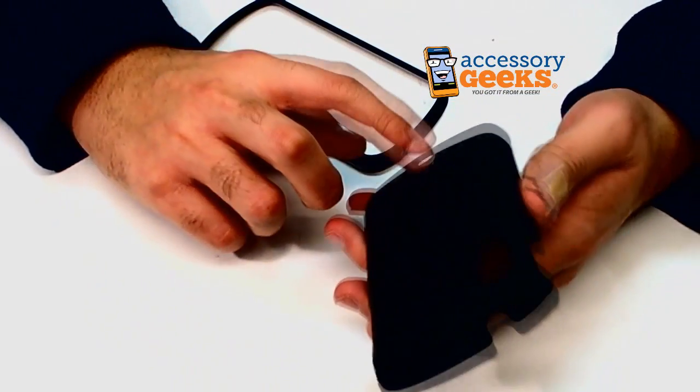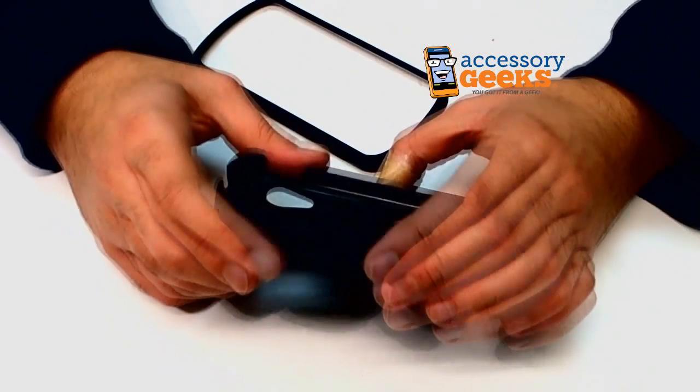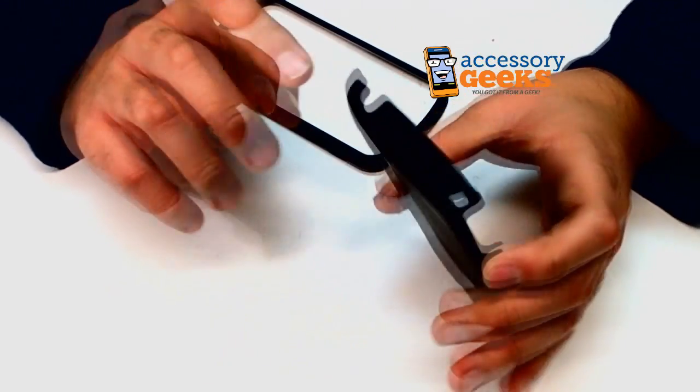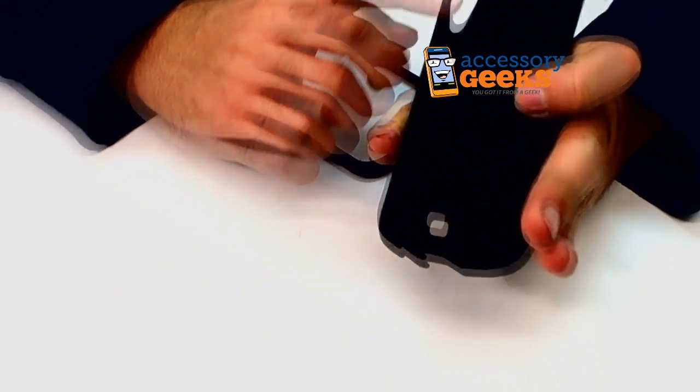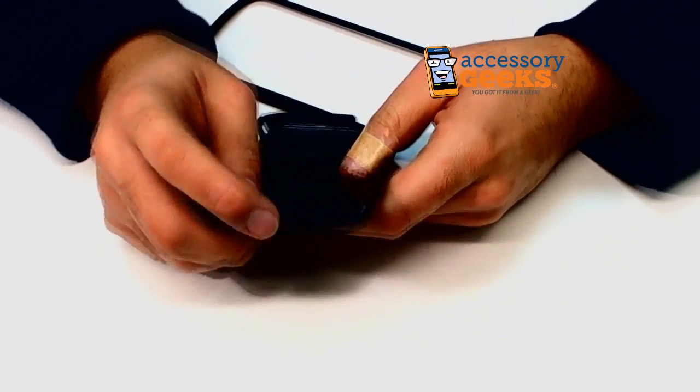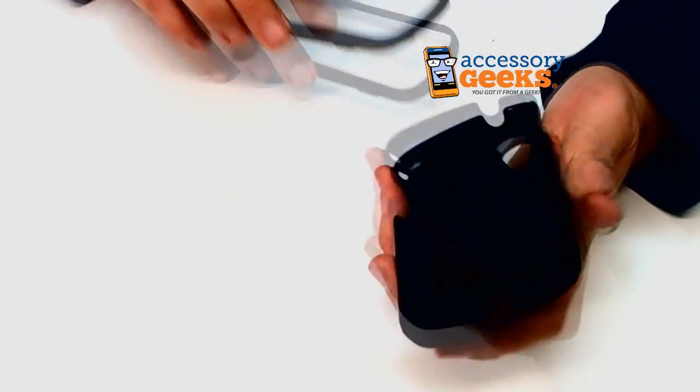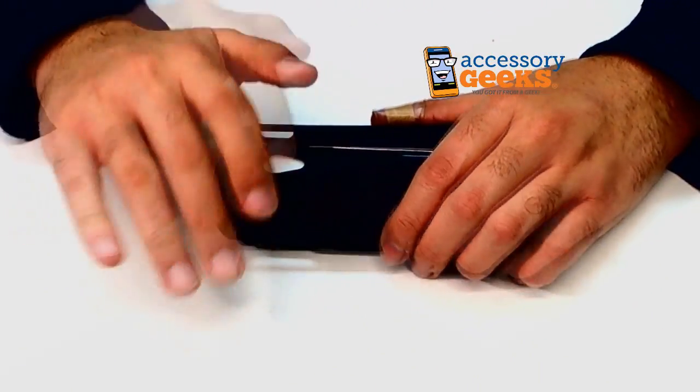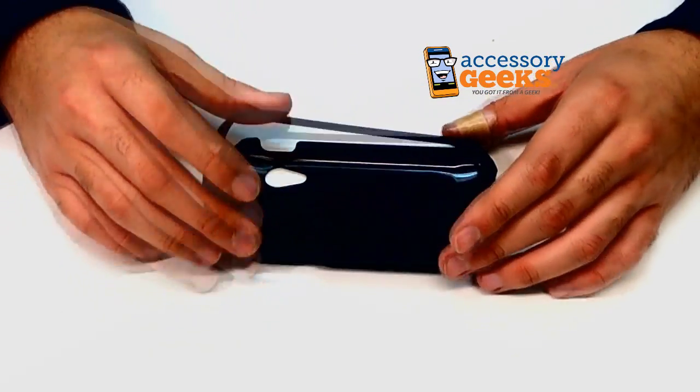This case will give you full access to all the buttons and ports. Volume, power, headphone jack, camera, and the charging dock at the bottom. It's a little hard to see. Something's up with the camera I think.